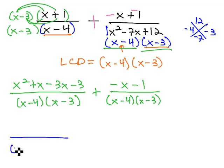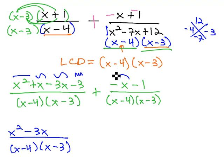Because we have a common denominator of x minus 3, we simply have to combine like terms in the numerator. x squared plus x minus 3x minus x is negative 3x, and negative 3 minus 1 is negative 4.